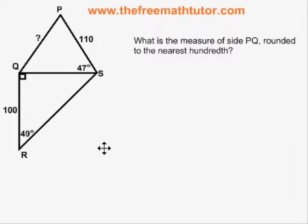So we are forced to move down and work with triangle QRS, which does have enough information to allow us to solve it. QRS is a right triangle and we know angle R which is 49 degrees and side QR which is 100.